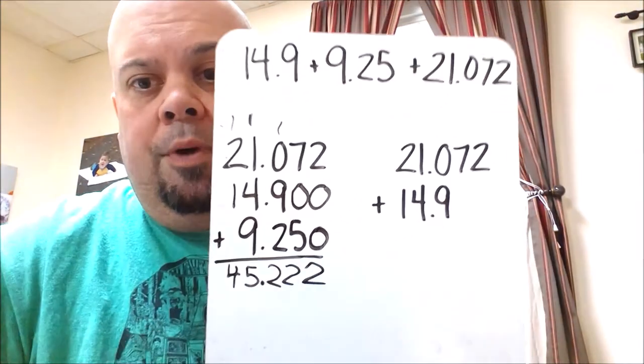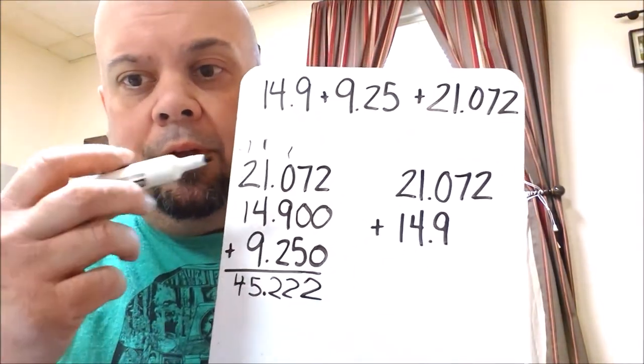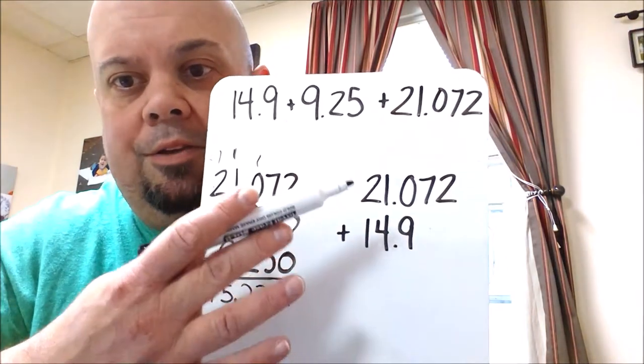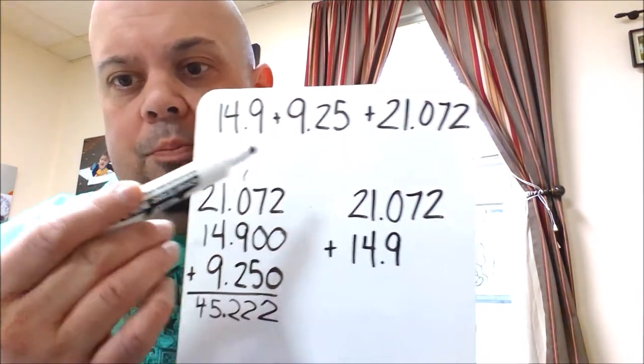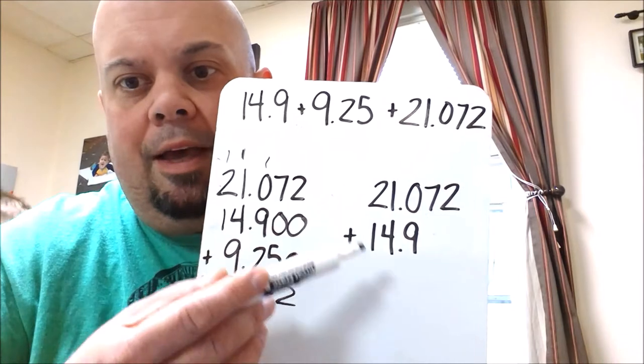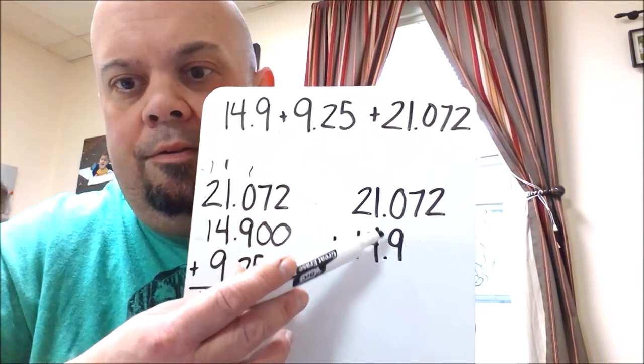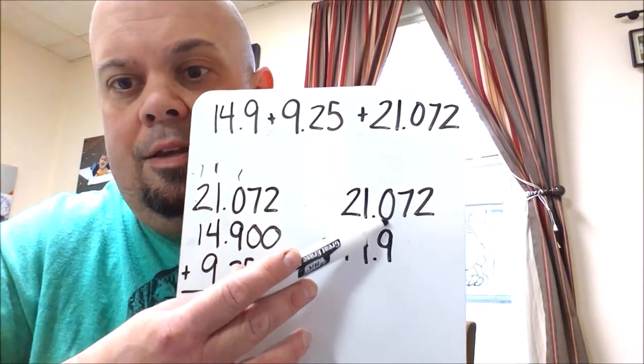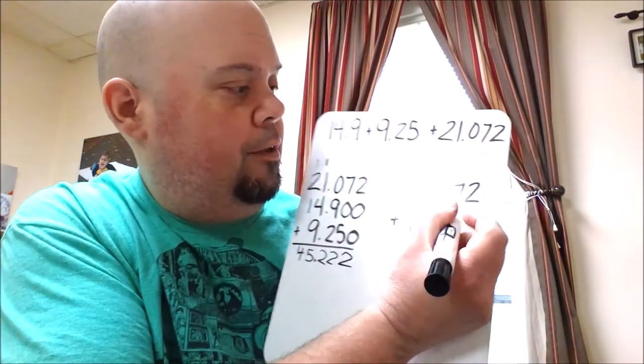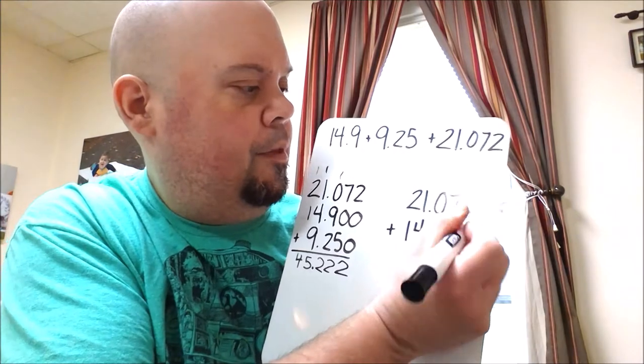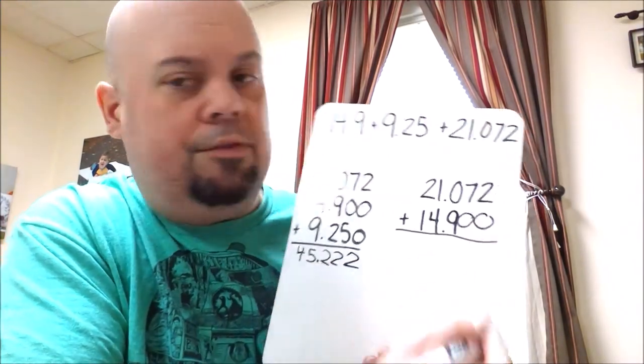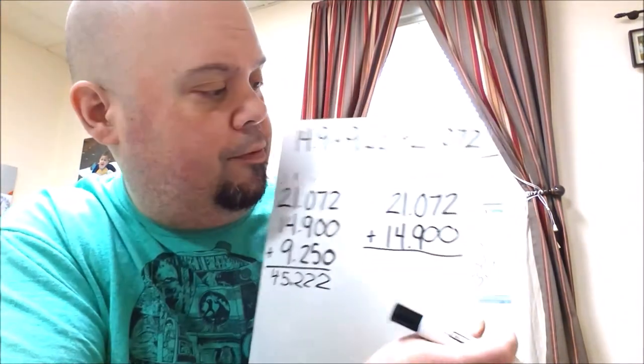Now another way to do that if you don't want to stack all of your numbers could be to take two at a time. So I just the two biggest numbers and I stack them. We've got tens and tens, ones and ones, decimals are in line, tenths and tenths. And then over here we would fill in those zeros to make those go out to the same place. And now you can just add two of them.